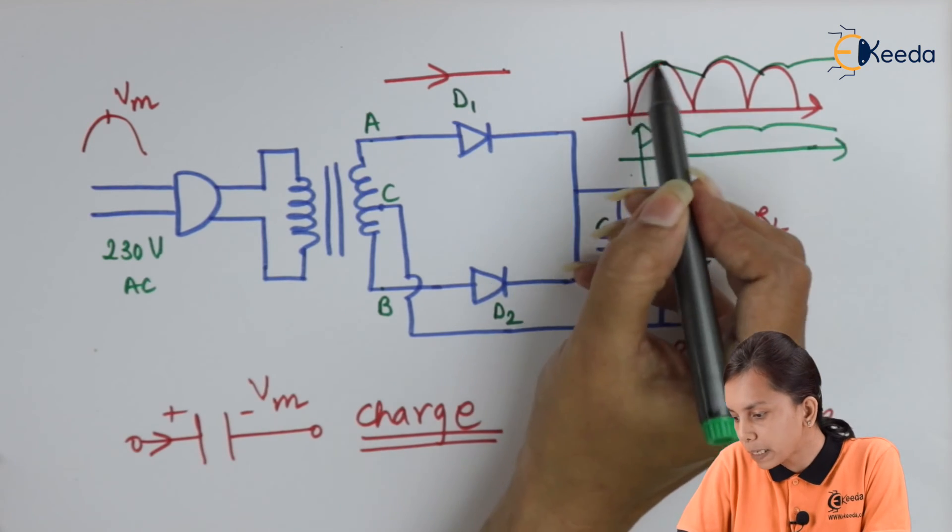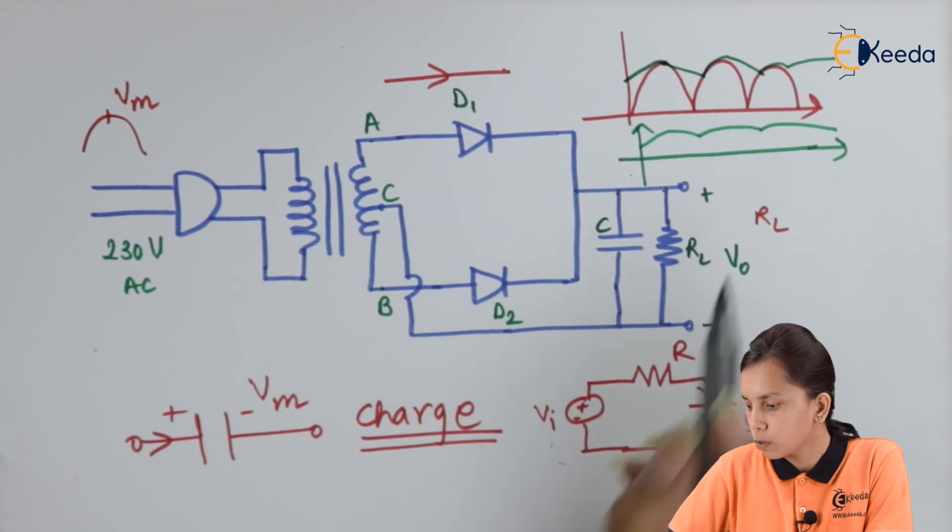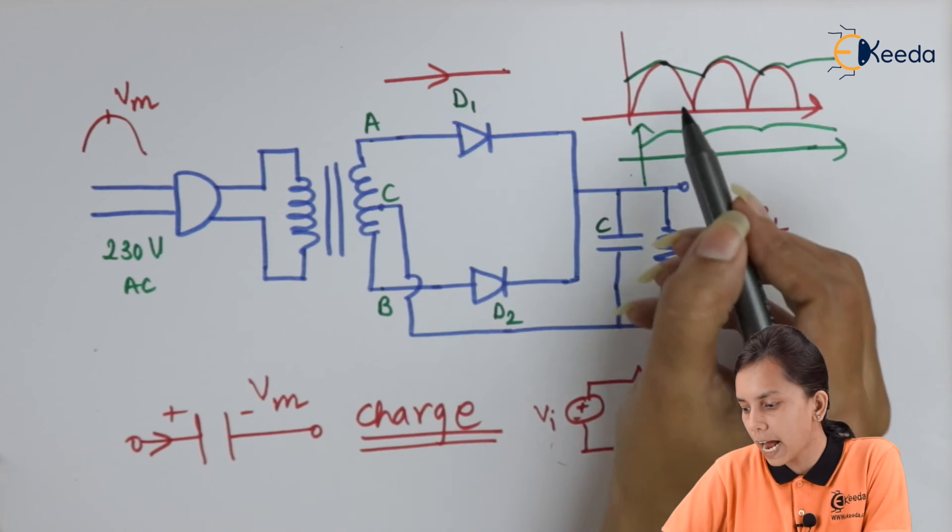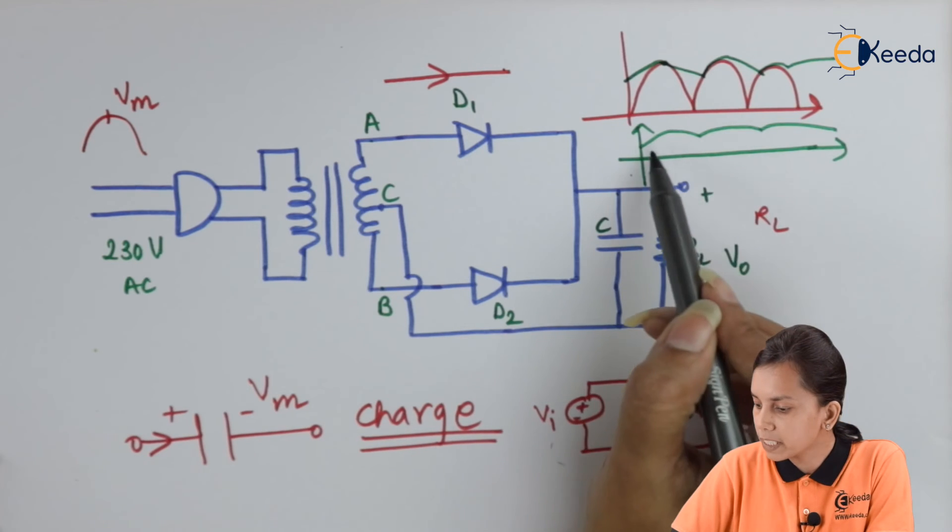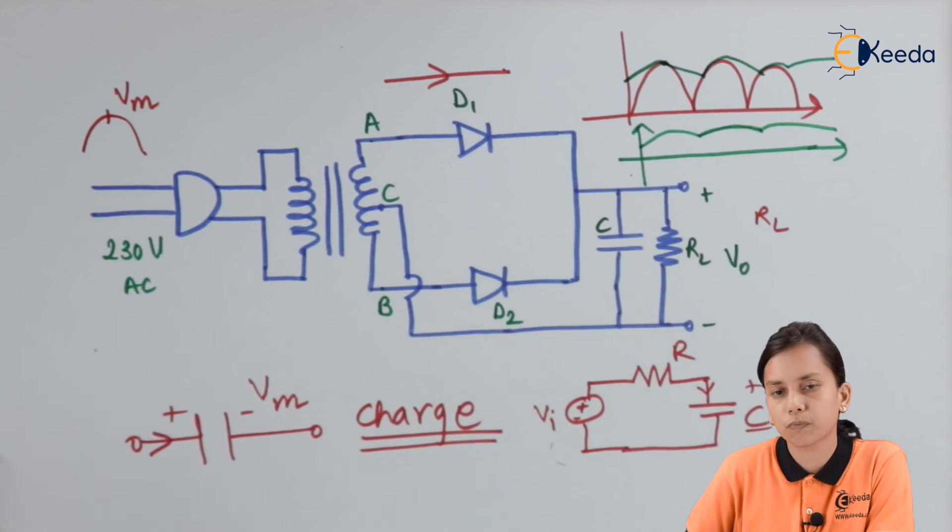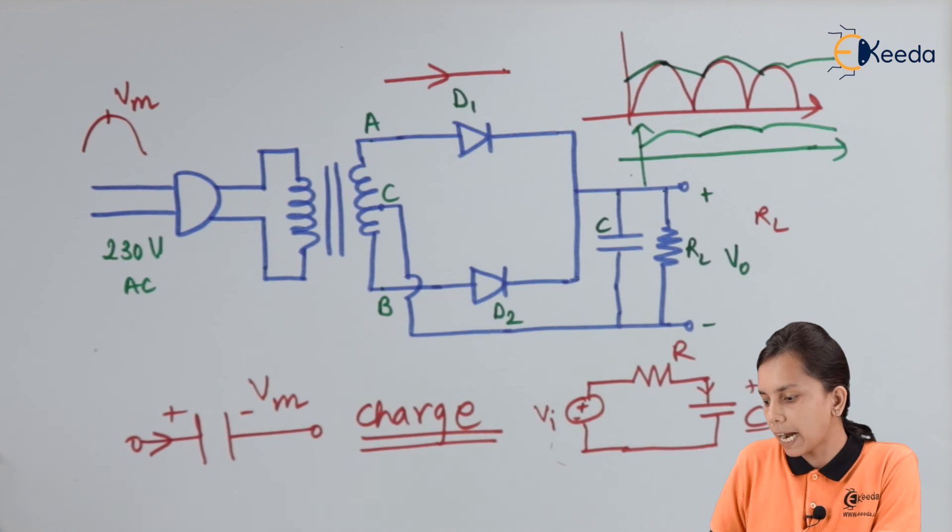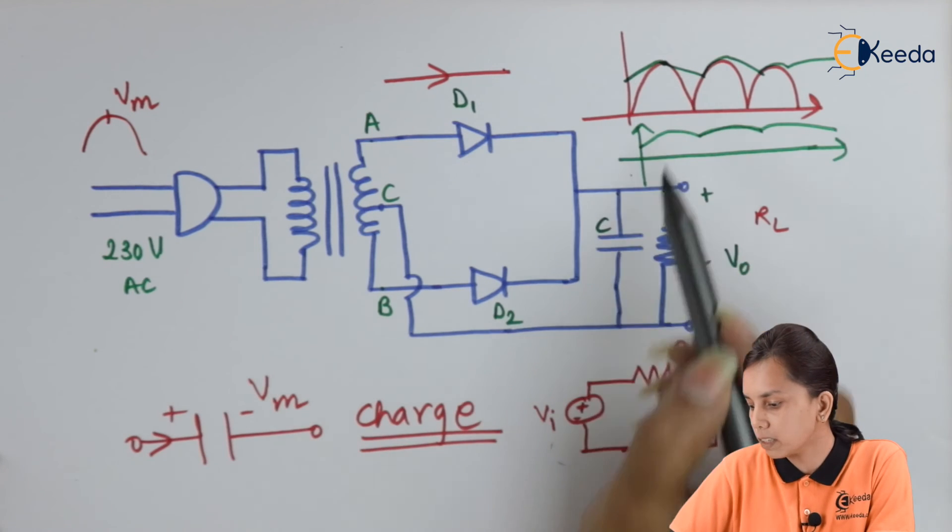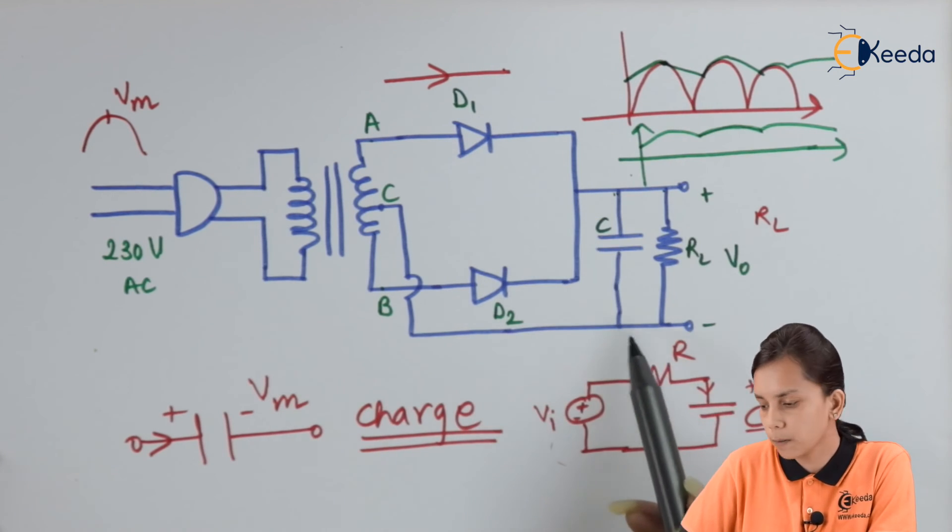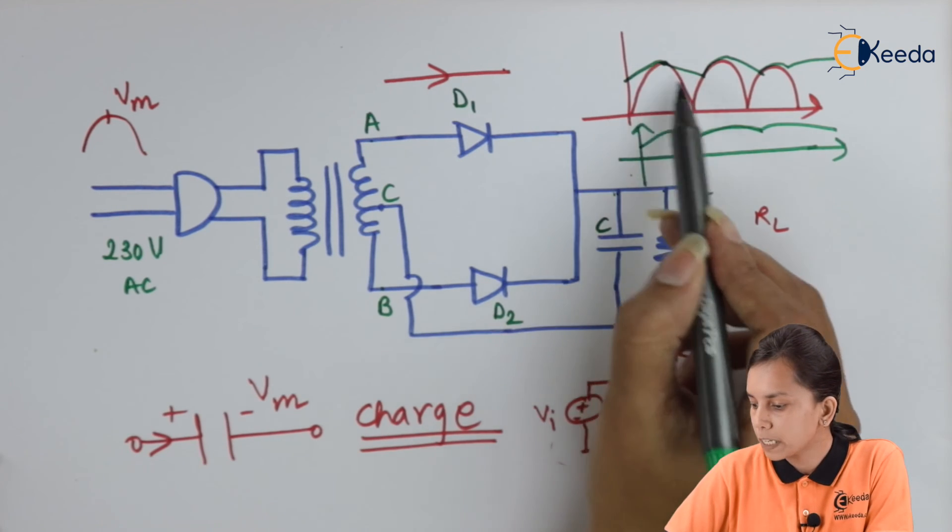We are extracting the peak values. This all the peak values. So I can say that instead of getting the pulsating DC, I am getting some sturdy DC. This is what our purpose was. That when we are getting this pulsating DC, I can extract with the help of this capacitor, I am able to extract out this peak values.